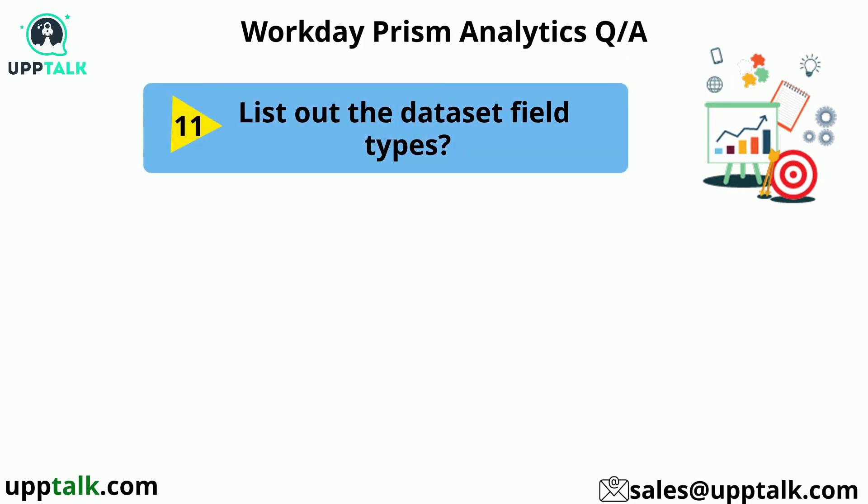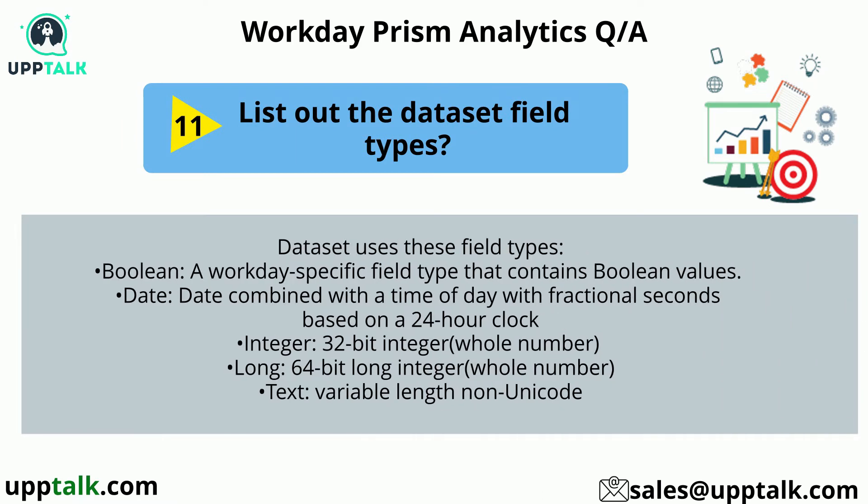List out the dataset field types. Datasets use these field types: Boolean — a Workday-specific field type that contains Boolean values; Date — date combined with a time of day with fractional seconds based on a 24-hour clock; Integer — 32-bit integer, whole number; Long — 64-bit long integer, whole number; and Text — variable length non-unicode.